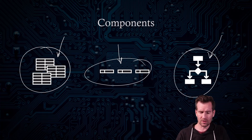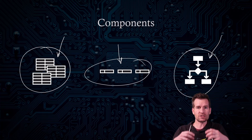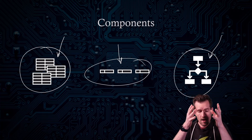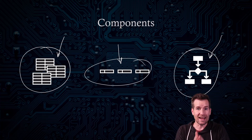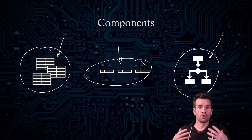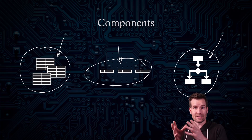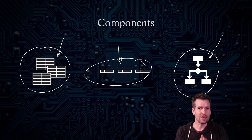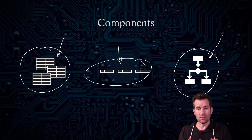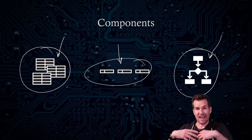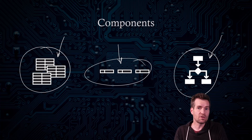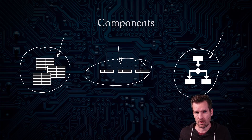And then finally, the algorithm is the set of instructions, the set of rules, the set of processes that the data goes through to determine how it's going to route the information. There are some drastic differences between how RIP works, how EIGRP works, and how OSPF works. So these are the different components designed to go into these dynamic routing protocols.